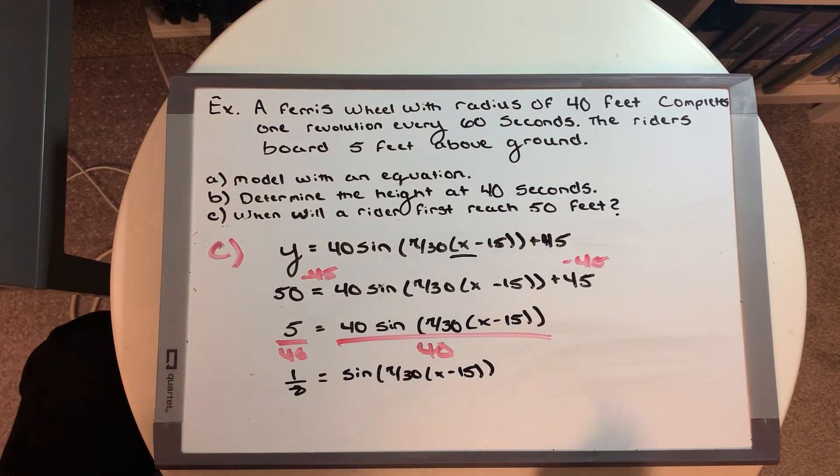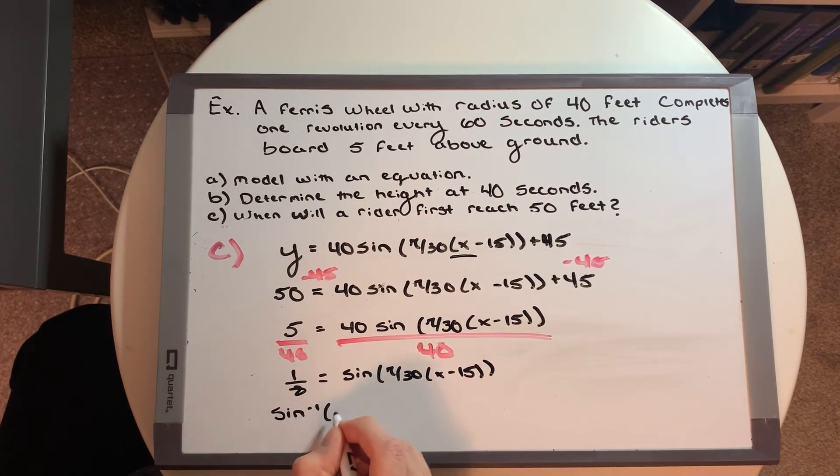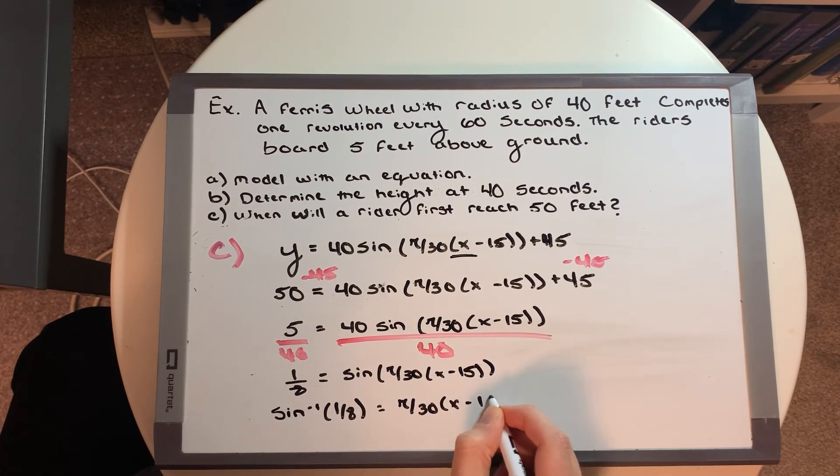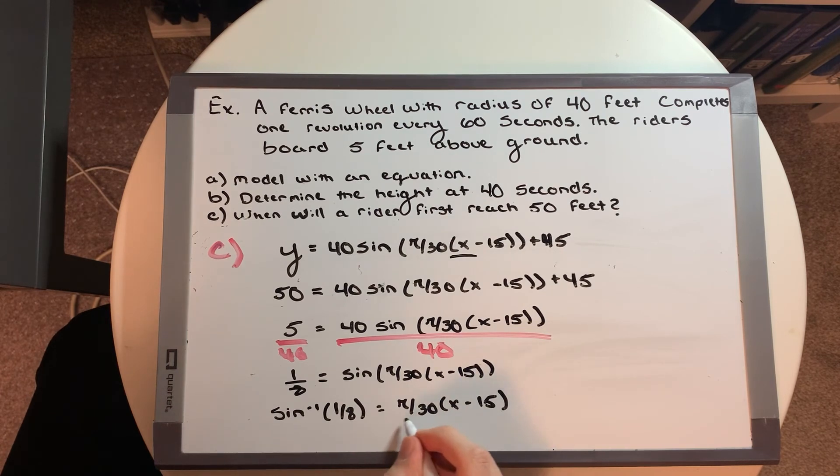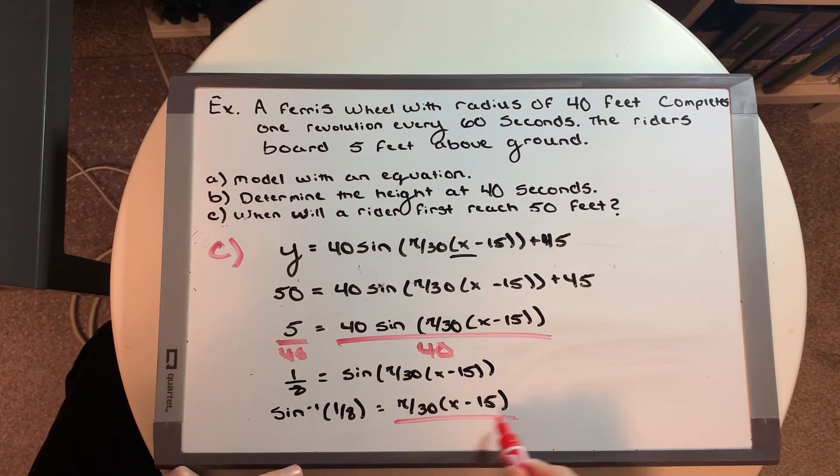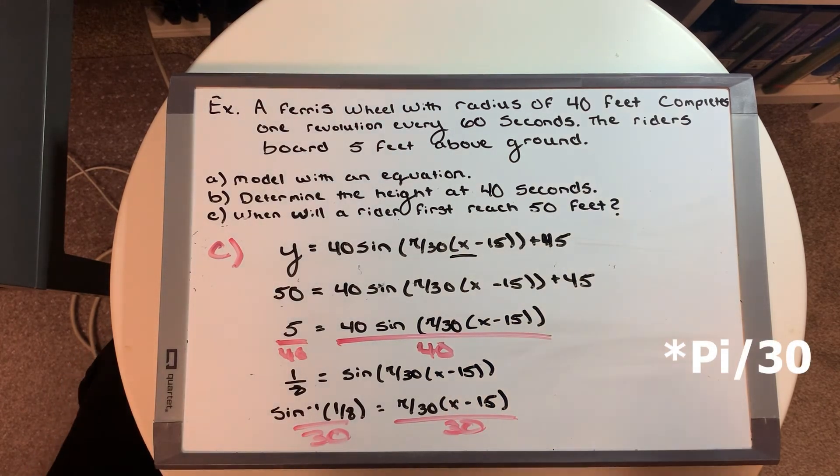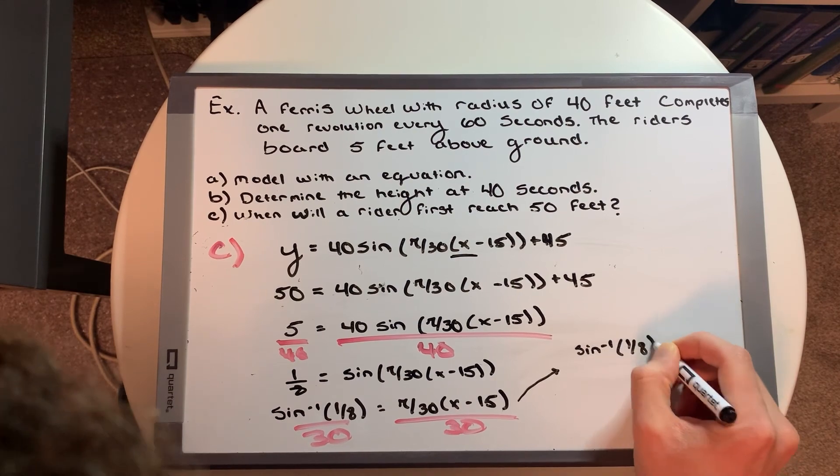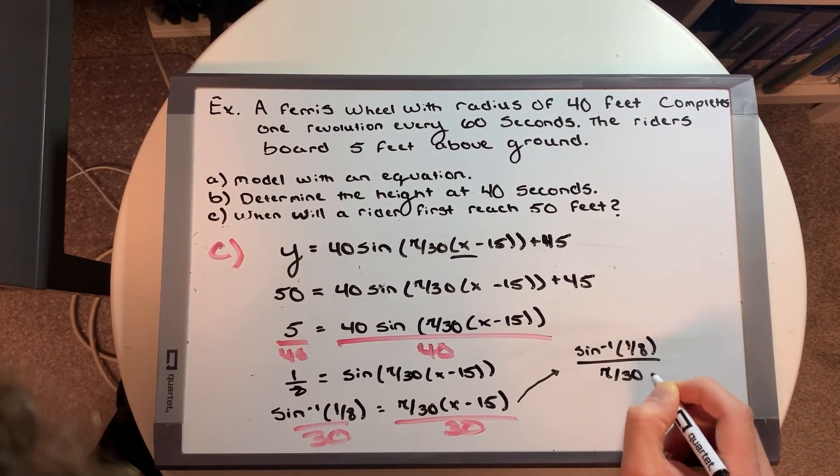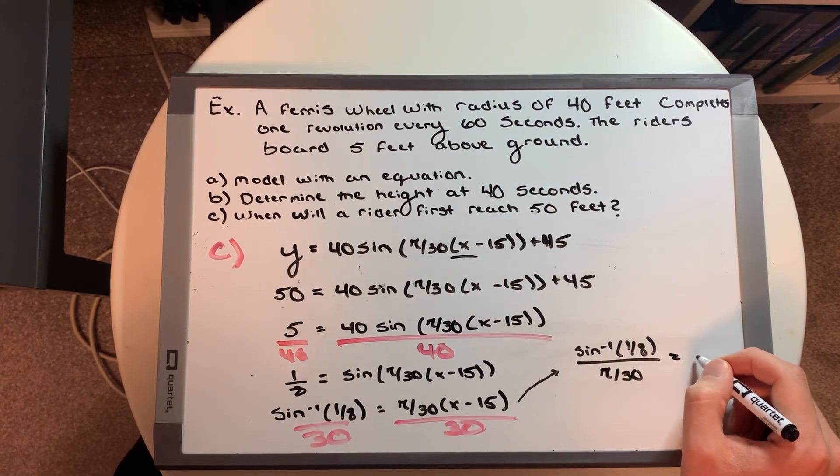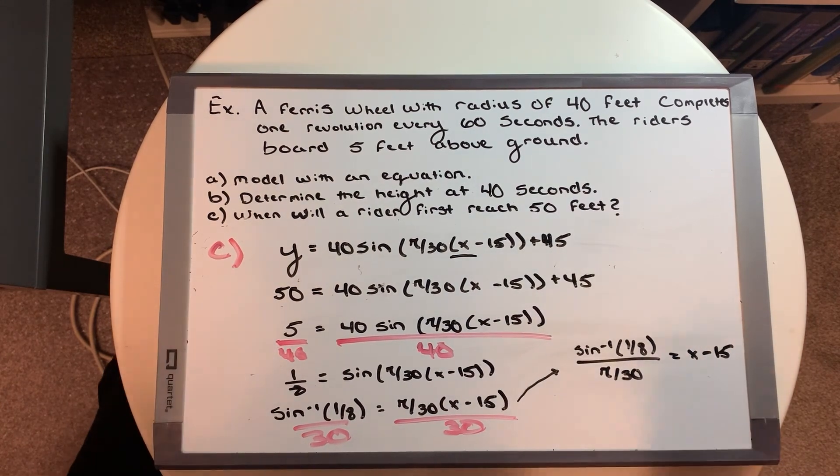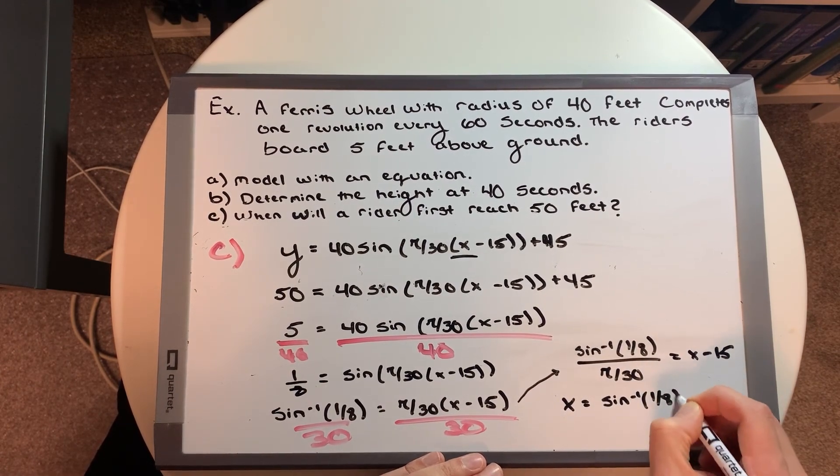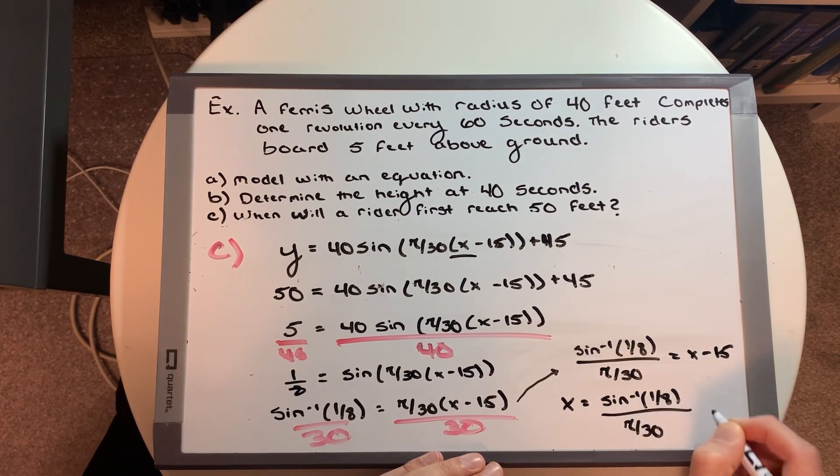And then we want to inverse our sine. So that's going to leave us with sine inverse 1/8 to get it off the right side is equal to pi over 30, x minus 15. All right, and then we're going to divide by that pi over 30 to get it to the other side. Let's continue just off to the side here. So now we have sine inverse 1/8 over pi over 30. And then we have that equal to x minus 15. And our final solution is to add the 15 to both sides. So x is equal to sine inverse 1/8 over pi over 30 plus 15.